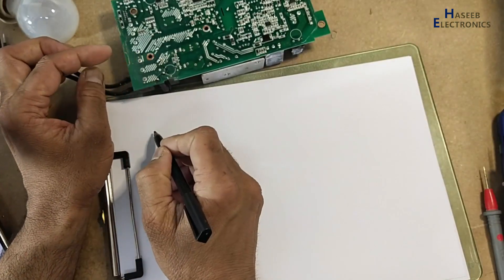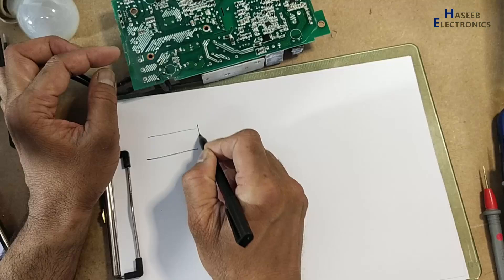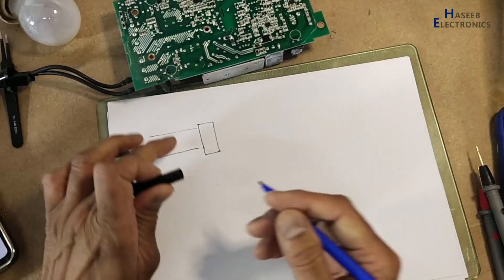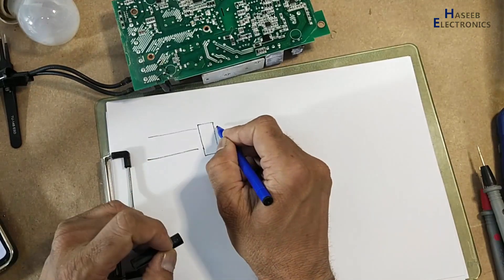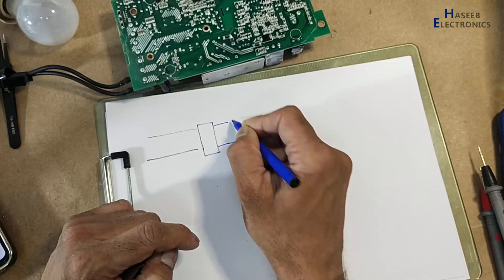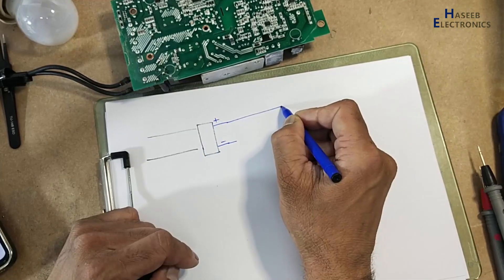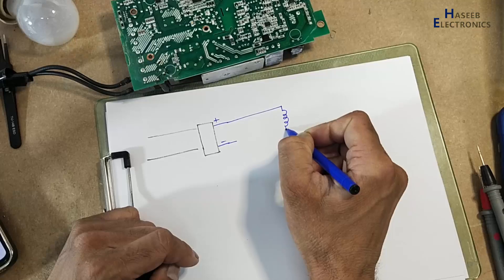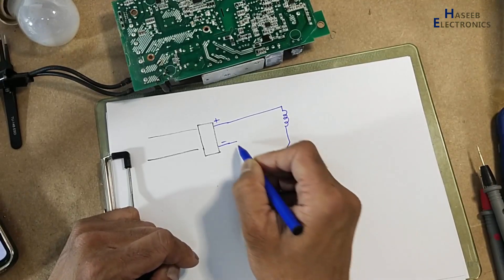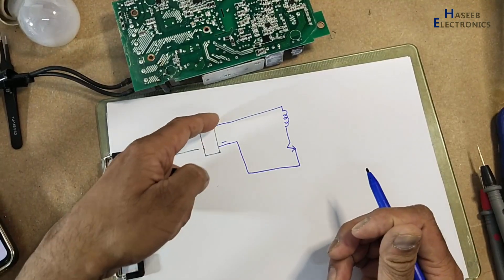If you check here, this is line and neutral — AC input. From here the circuit will be converted into DC voltage, giving us positive and negative. There is a primary circuit with a switching device, and this forms one circuit.